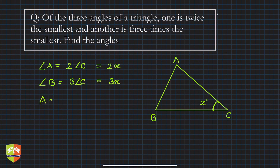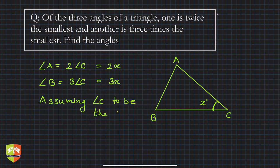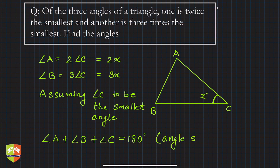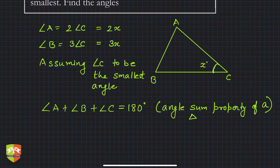We're assuming angle C to be the smallest angle. You could have taken any angle as the smallest — there's no problem. If you consider A or B as smallest, the problem will not change. Now, angle A plus angle B plus angle C equals 180 degrees, by the angle sum property of a triangle. The sum of three angles in a triangle is 180 degrees.